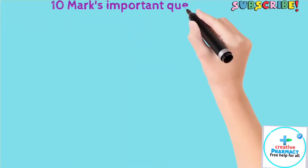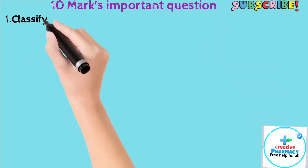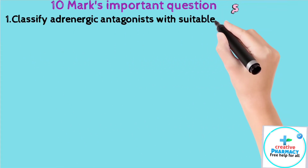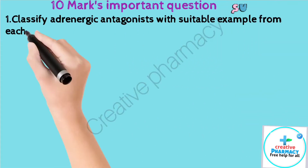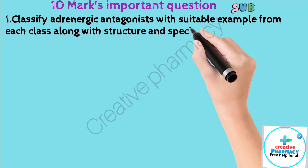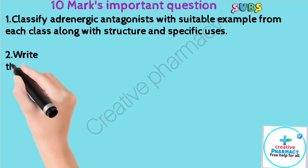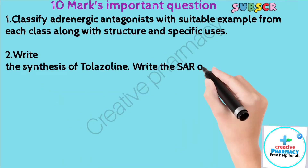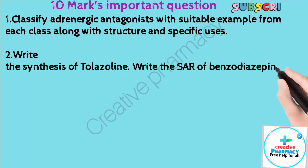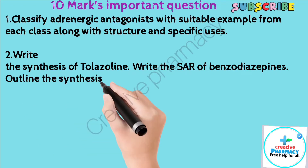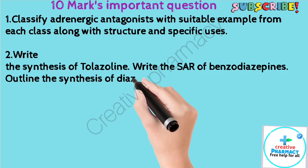Question 1: Classify adrenergic antagonists with suitable examples from each class along with structure and specific uses. Question 2: Write the synthesis of tolazoline, write the SAR of benzodiazepines, and outline the synthesis of diazepam.